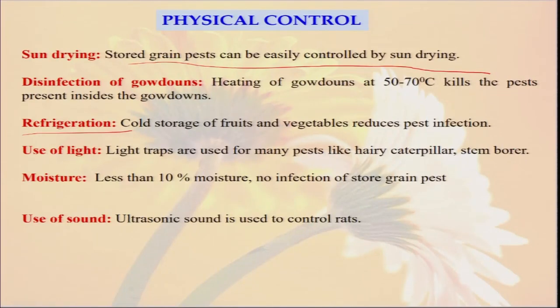Refrigeration is sometimes needed. Use of light traps — especially in October end or November, during Diwali time, insects come towards the lights. These insects have a natural tendency to come to light. So whenever in our field, farmers sometimes use a light and beside the light they put some water or maybe some kerosene oil. So whatever insects come, they will be killed by that, and their population will be reduced.